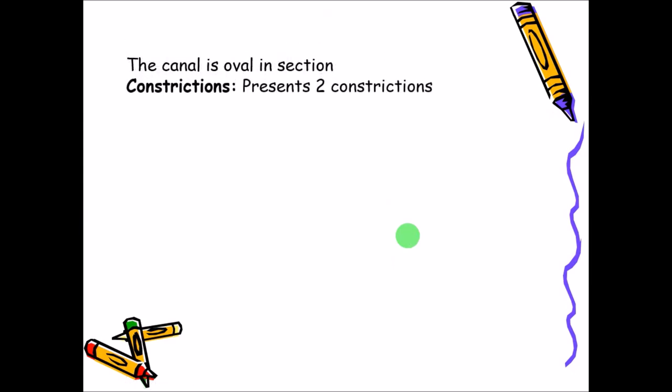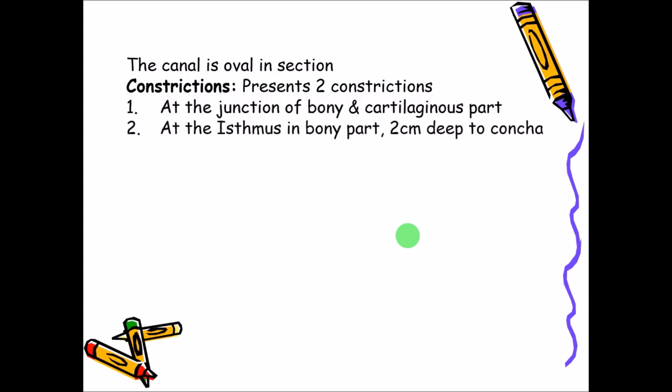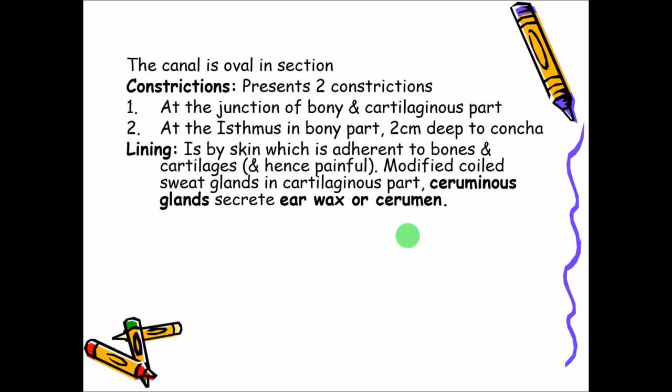The canal is oval in cross section and presents two constrictions: one at the junction of the bony and cartilaginous parts, and the second is called the isthmus, the narrowest part, located almost two centimeters deep within the 2.4-centimeter-long external acoustic meatus. The canal is lined by skin directly adherent to the cartilage or bone, which is why even a small infection or accumulation of pus leads to severe pain.